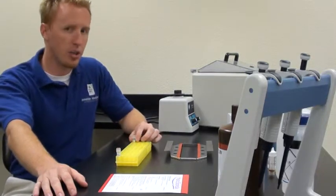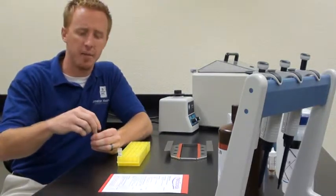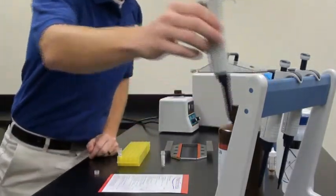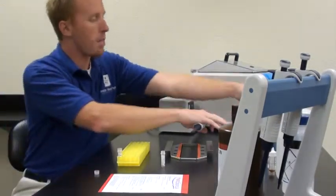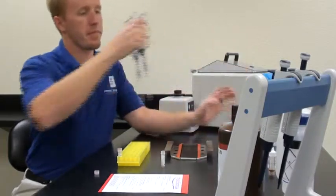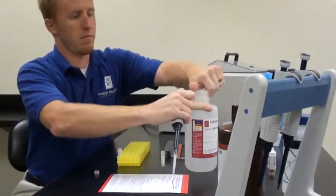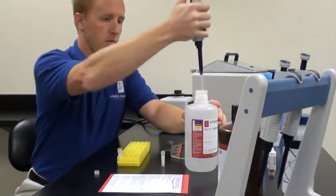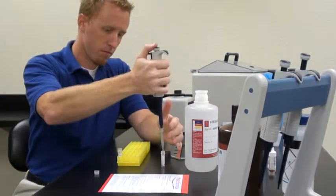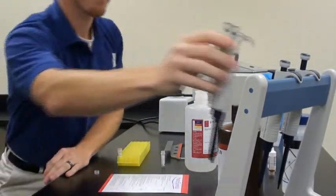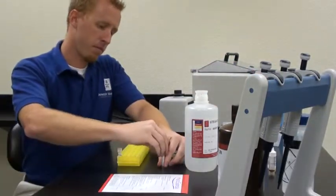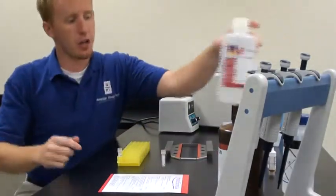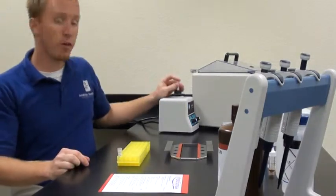Our next step is going to be to reconstitute our proteinase K, the digestive enzyme that is going to eat up all those ribonuclear proteins and expose our target. To do that, we're going to take 200 microliters of steam-distilled water and apply it to the proteinase K. Just like you did with the probe, after you add 200 microliters of steam-distilled water, be sure to vortex and agitate.